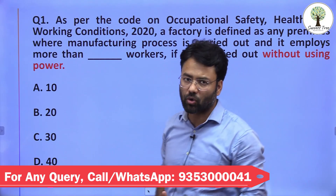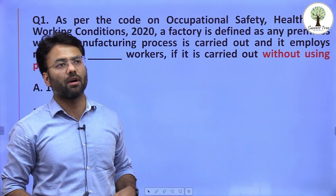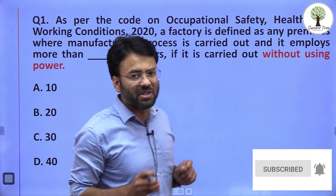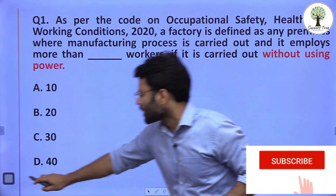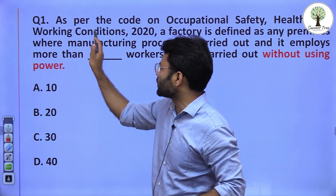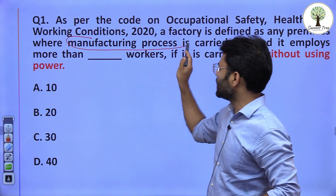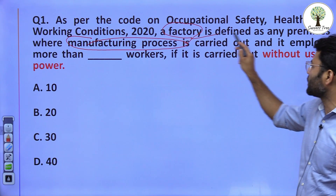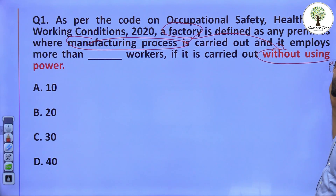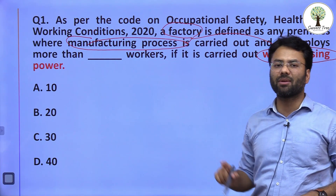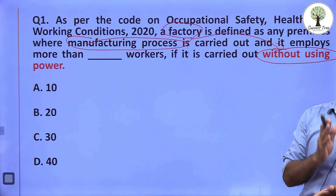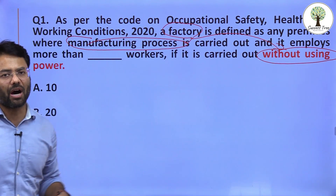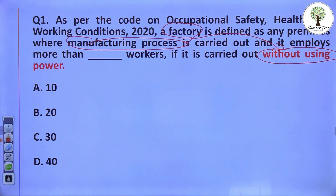The first question is from the Code on Occupational Safety, Health and Working Conditions. This question specifically asks about the definition of factories with respect to the manufacturing process. If it is a factory without power, how many workers are required for the applicability of this code?